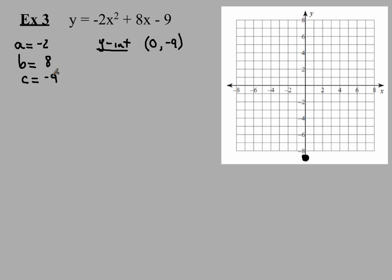Next, I'm going to find my axis of symmetry, my AOS. My AOS is going to be x equals, using the formula negative b over 2a. So negative b is -8 over 2 times -2. 2 times -2 gives me -4 for the denominator, and I have -8 in the numerator. When I reduce that, I get 2.